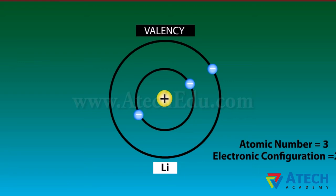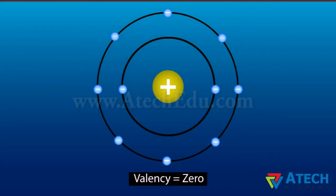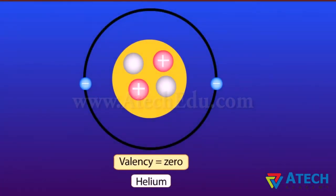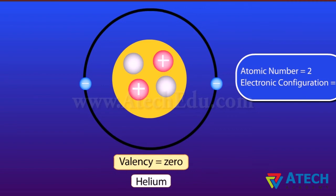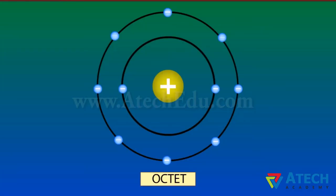According to the Bohr-Bury scheme, the outermost shell of an atom can accommodate a maximum of 8 electrons. Atoms of elements having a completely filled outermost shell show little chemical activity — their valency is zero. Helium has atomic number 2 and contains only one orbit with a maximum capacity of two electrons, so its combining capacity is zero and it is inert. All other elements achieve stability with eight electrons in the outermost shell — this is called achieving the octet — done by sharing, gaining, or losing electrons.